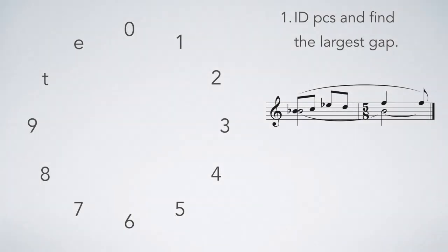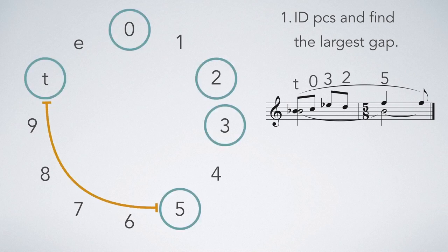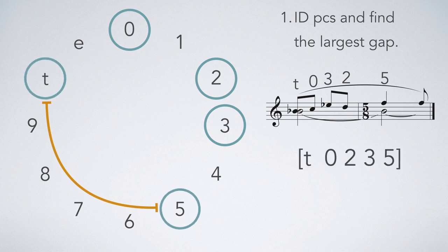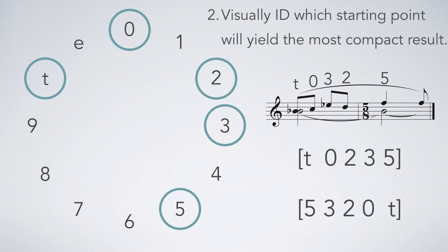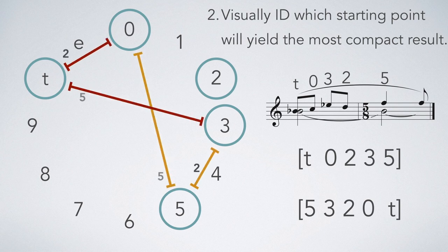Start by arranging a clock face for yourself. Identify the pitch classes of the set and find the largest gap. So, we can either proceed clockwise from 10 or counterclockwise from 5. Visually, we should be able to see pretty clearly that starting at 5 packs smaller intervals closer to the beginning of the order than if we started at 10. So, we should move counterclockwise from 5.